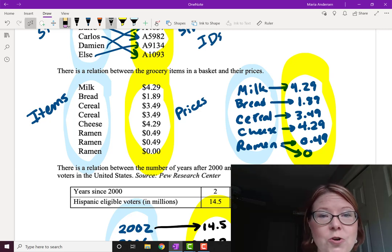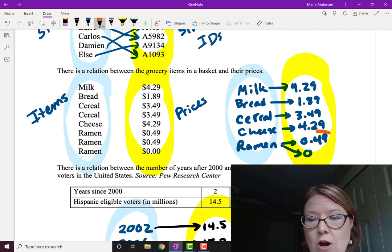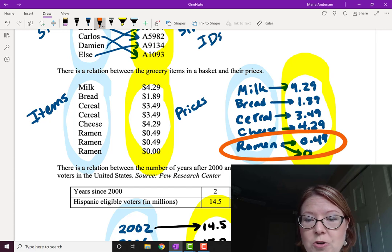The problem in the grocery store graph is the ramen noodles. The ramen noodles ring up for two different prices. So we have one input with two different outputs. The cereal is just fine because the same input produces the same output.